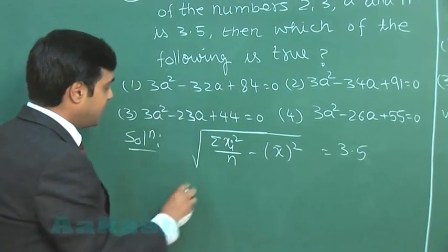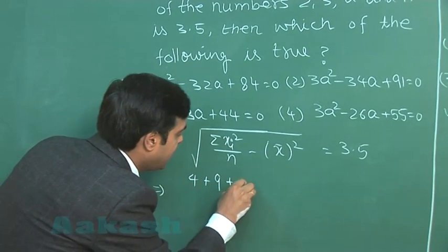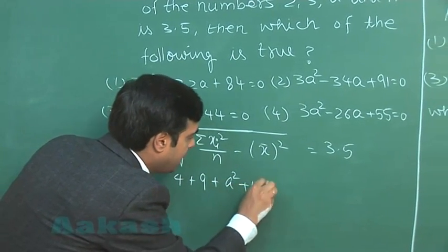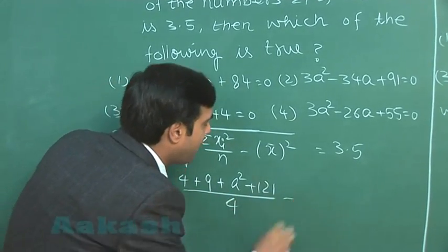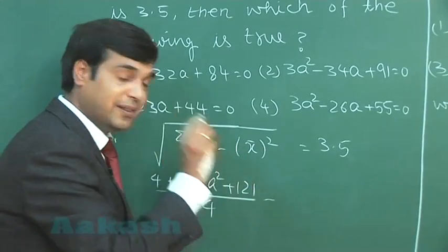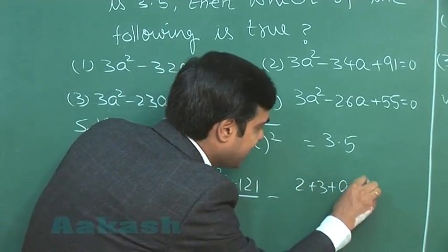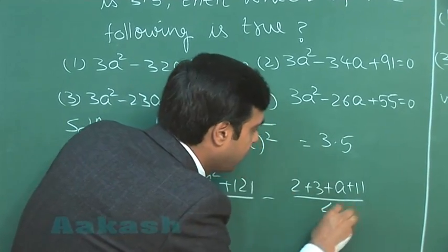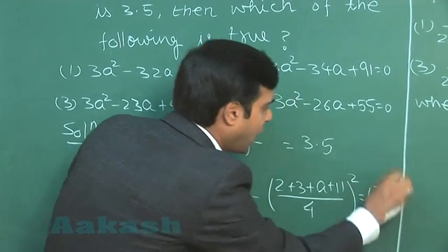So we can write here simply, squares of numbers as 4 plus 9 plus A square plus 121 divided by 4, minus mean that is 2 plus 3 plus A plus 11 divided by 4 square, is equal to 7 by 2 square.